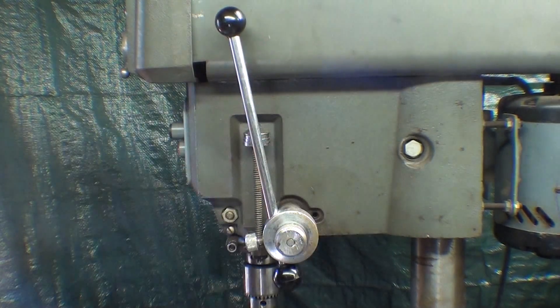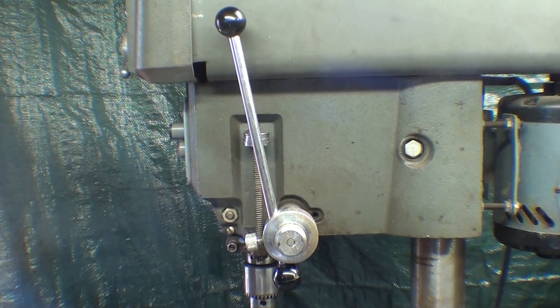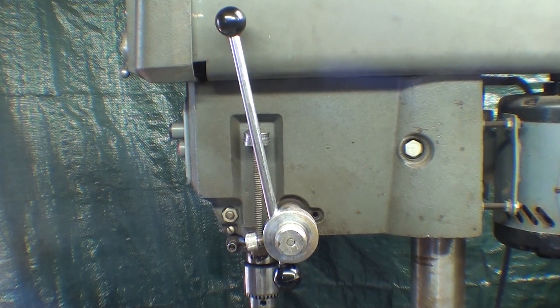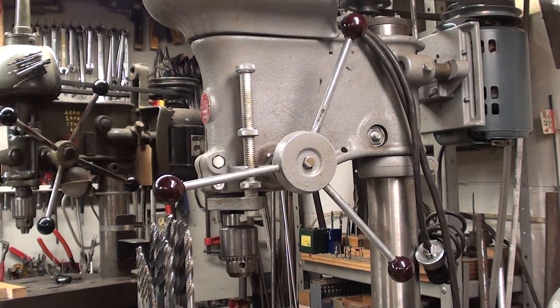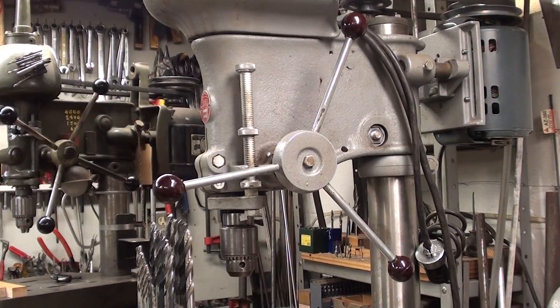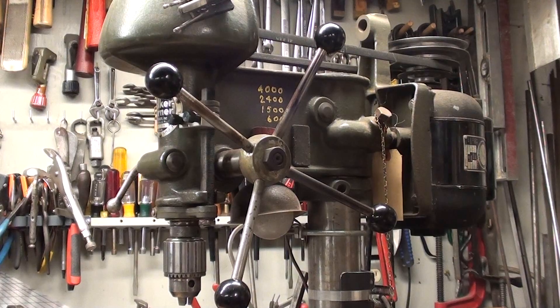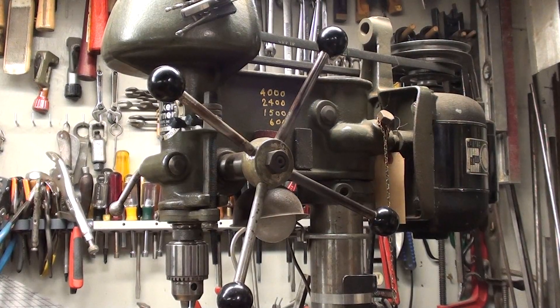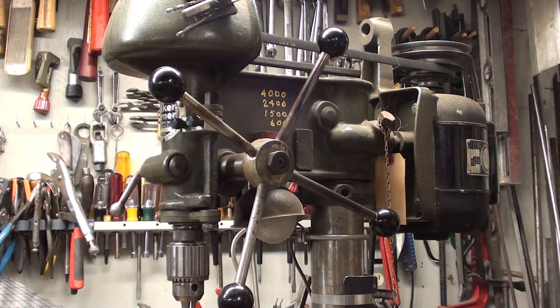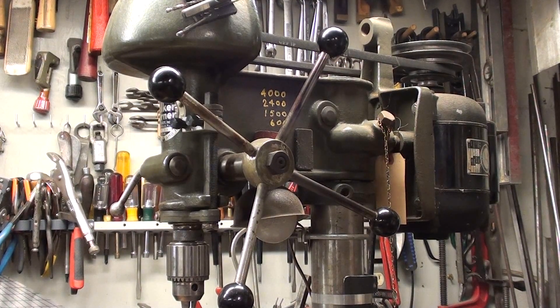That's the downfall of this machine, but let me show you what better and best is on my other presses. Three handles on the quill feed is better. And lastly, four handles on the quill feed, like on this little Walker-Turner drill press, is best. So we had good, better, and best.